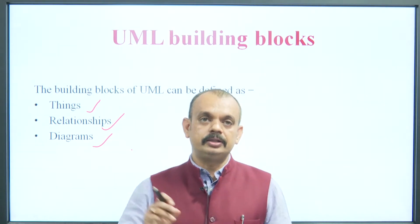Object diagram kaise banate hain? UML object notation ka format hai: instance name, colon, class name — then attribute and value. For example, 'menuWindow' is an instance; its attributes are visible = true, position = (10, 23), size = 160. Yeh format UML object notation ko represent karta hai.